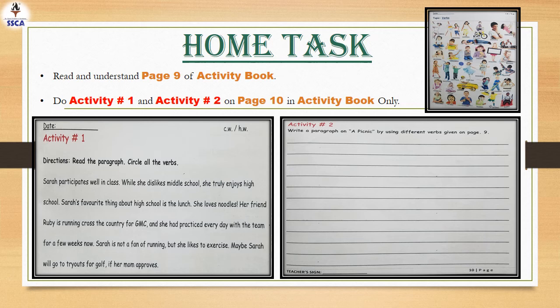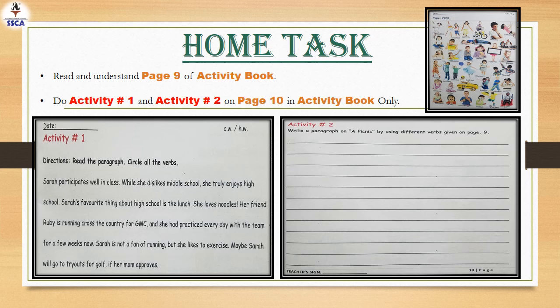Let me explain activity number 1: you have to read the paragraph and circle all the verbs — all the action words you find in it. The paragraph is: Sarah participates well in class. While she dislikes middle school, she truly enjoys high school. Sarah's favorite thing about high school is the lunch — she loves noodles. Her friend Ruby is running across the country for GMC and she had practiced everyday with the team for a few weeks now. Sarah is not a fan of running, but she likes to exercise. Maybe Sarah will go to try-outs for golf if her mom approves. Read this paragraph by yourself and circle all the verbs.